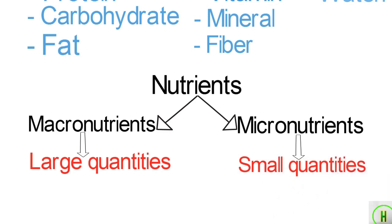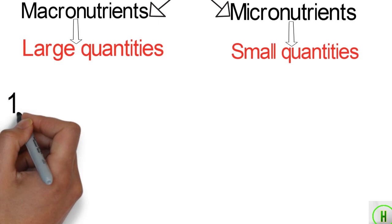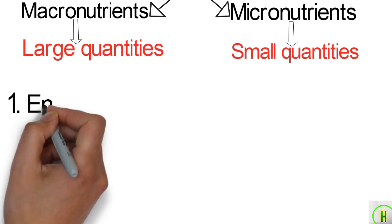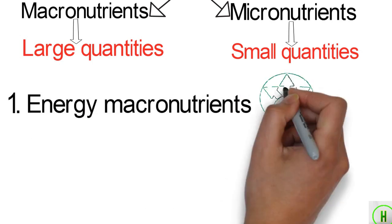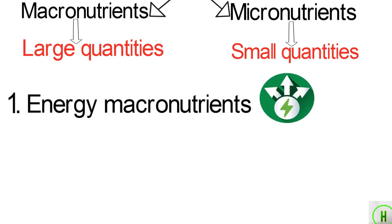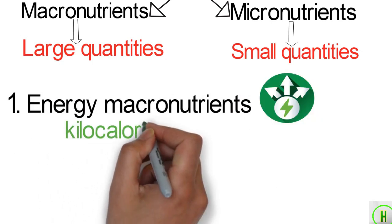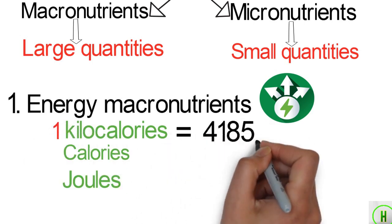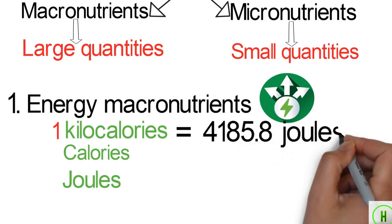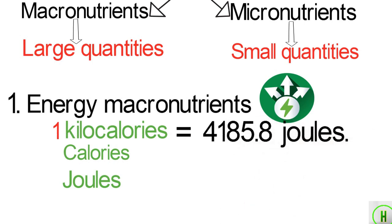Macronutrients can be further split into energy macronutrients, that provide energy, and macronutrients that do not provide energy. Energy macronutrients provide energy, which is measured either in kilocalories (kcal or calories) or joules. 1 kilocalorie equals 4185.8 joules.